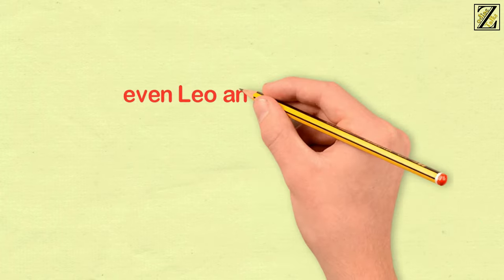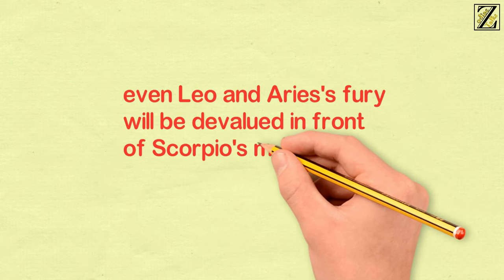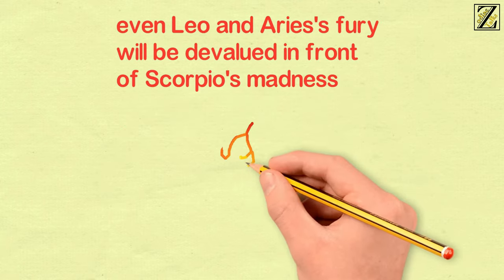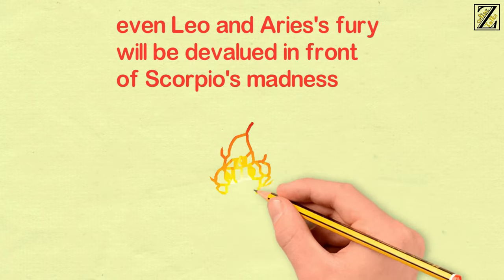Here, even Leo and Aries' fury will be devalued in front of Scorpio's madness. In spite of being a water sign, their fury will exhibit like a fire sign.